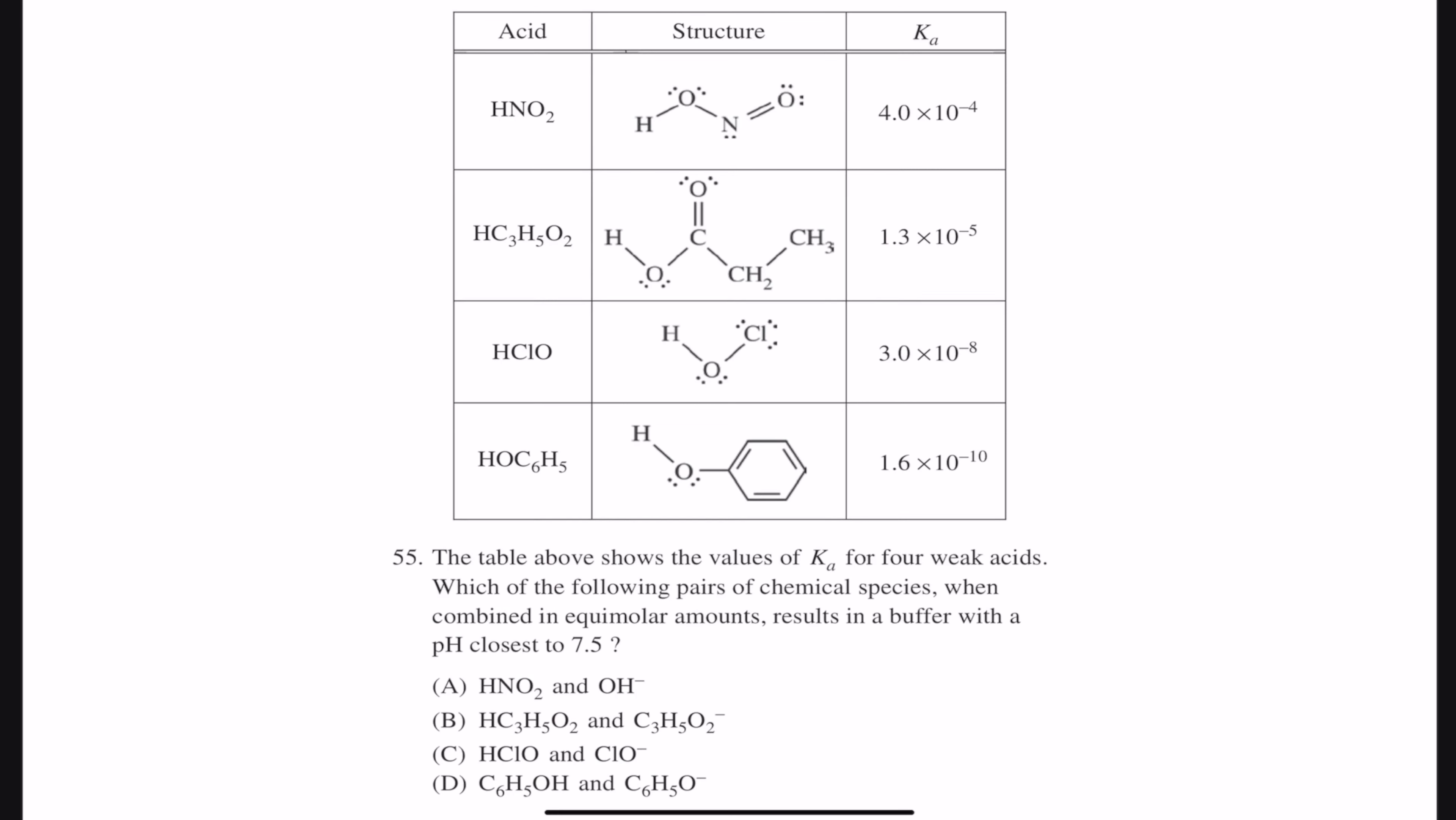Number 55. The table above shows the values of Ka for four weak acids. Which of the following pairs of chemical species when combining equimolar amounts...